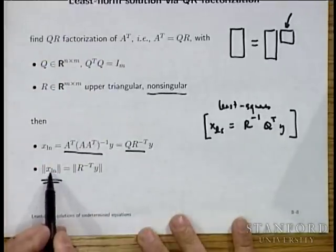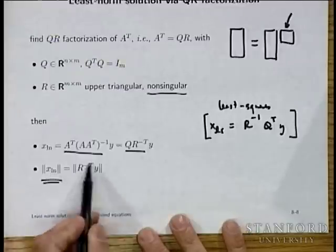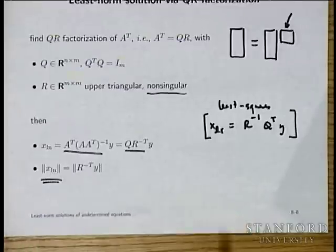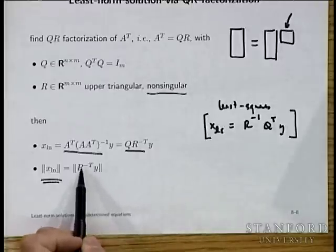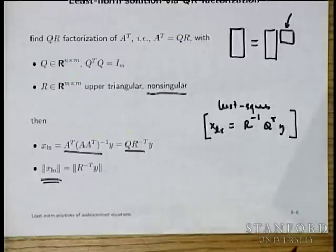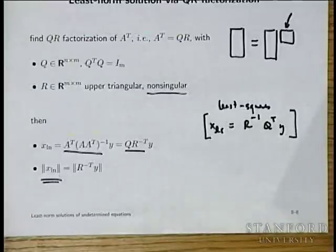The norm of the least norm solution is simply the norm of R minus transpose times y — that gives you the norm directly.